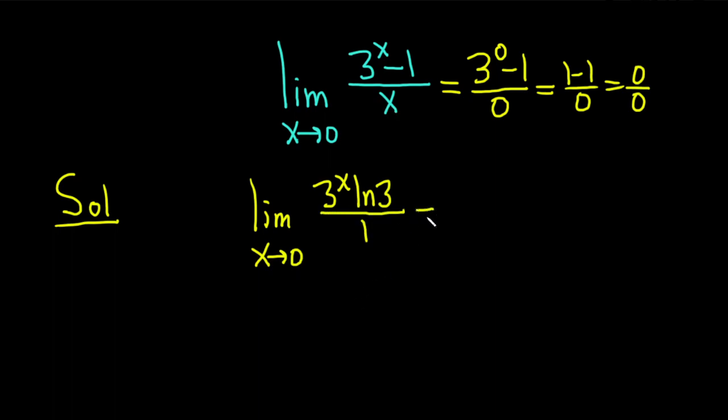Now we can plug in the 0, drop the limit sign. So we get 3 to the 0 ln 3. That's over 1, so I didn't write it. 3 to the 0 is 1, so you get 1 times ln 3. And so you get ln 3.